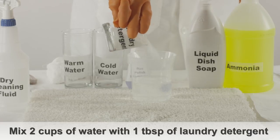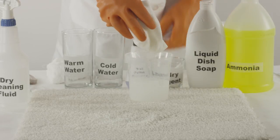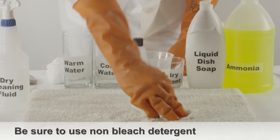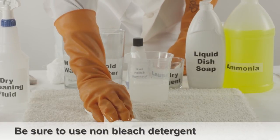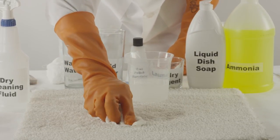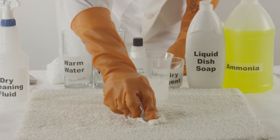Mix 2 cups of cold water with 1 tablespoon of laundry detergent. Be sure to use detergent that is a non-bleach formula. Apply this detergent directly onto the stain using a white cloth and scrub the stain.